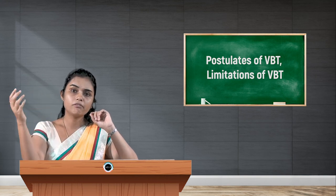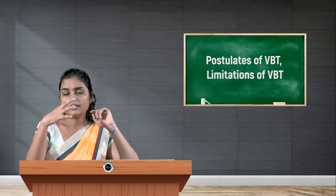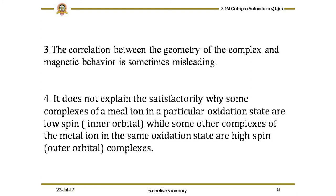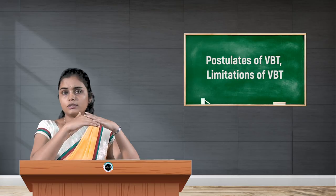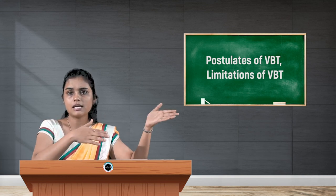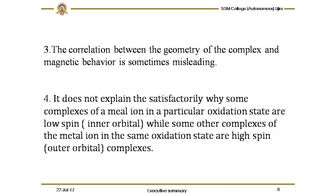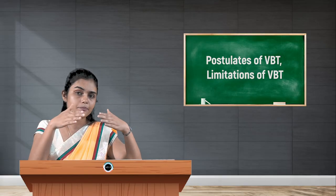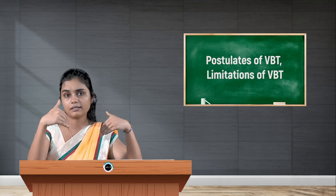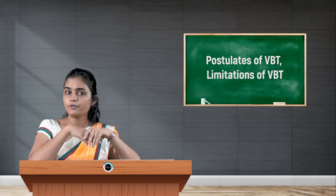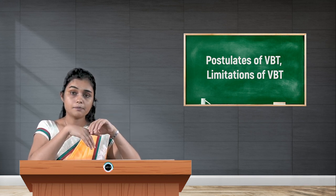The third limitation is that VBT fails to satisfactorily explain the relationship between the geometry of a complex and its magnetic behavior. There are correlations suggesting that if the geometry is a certain type, the complex will be paramagnetic, or if it is square planar, it may be diamagnetic. However, this can be misleading — sometimes it may not hold true. VBT therefore fails to reliably explain the correlation between the geometry of the complex and its magnetic behavior.